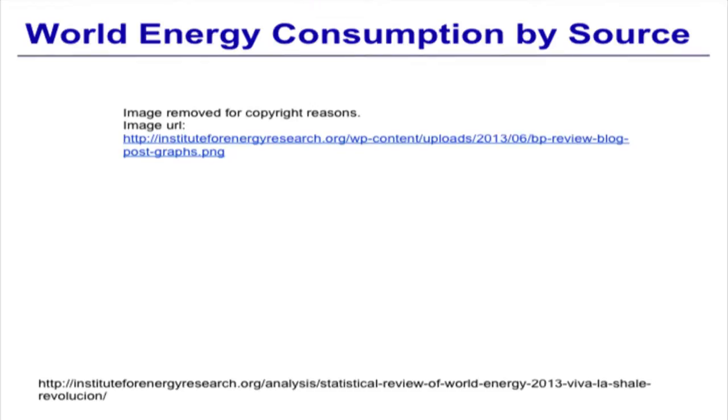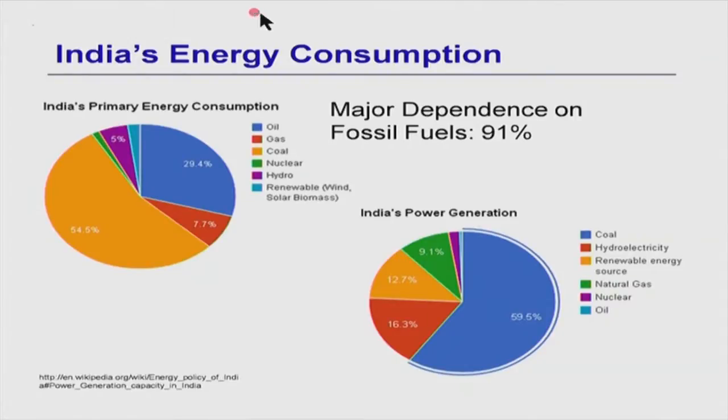The first point was our near-total dependence on environmentally unsustainable technologies. This is world energy consumption by source — 2012 data — and the fossil fuel dependence is something like 87%, with relatively smaller shares of nuclear, hydro, and other renewables. Coal, oil, and natural gas form the major share. In India, the scene is not very different — major dependence on fossil fuels up to 91%. India's power generation is heavily dominated by fossil fuels, with coal having a 60% share.